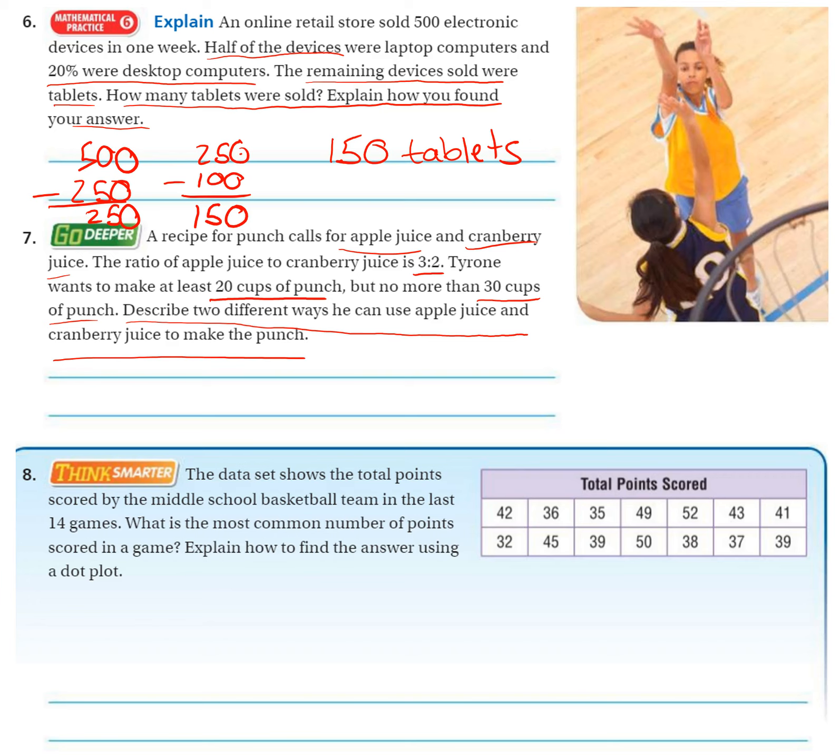Describe two different ways he can use the apple juice and cranberry juice to make the punch. Okay, so we need multiples of this ratio. But we need at least 20. So if we go up 6 to 4, that's only 10 total. If we go up 9 to 6, that's only 15. If we go up to 12 to 8, that's 20 exactly.